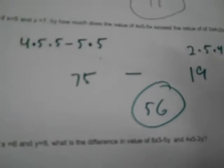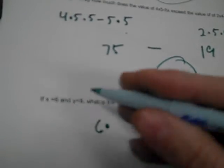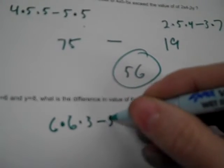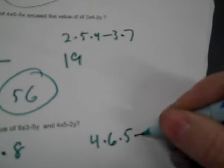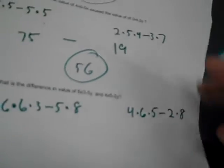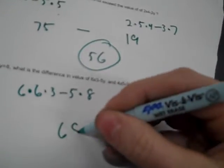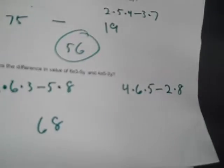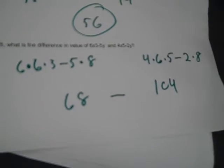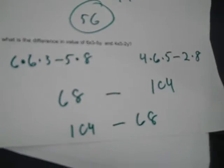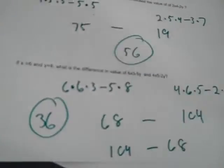x is 6, y is 8. Difference means you're subtracting, and the value of 6x3 minus 5y and 5x4 minus 2y. So 6 times x times 6 times 3 minus 5, and then y is 8. And over here you've got 4, and then x, so times 6 times 5, minus 2y, and then y is 8. On one side we've got 6 times 6 times 3 minus 5 times 8, and that's 68. And over here you've got 4 times 6 times 5 minus 2 times 8, that's 104. Now you want to flip the subtraction so the bigger number comes first. So 104 minus 68, you want the larger value to be subtracted from. I've got 36.